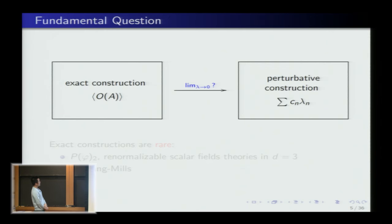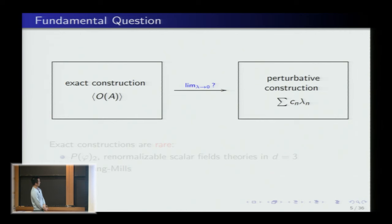The fundamental question then is: if we have an exact construction of a path integral, and we always have the perturbative construction, is it true — just like in the finite-dimensional example — that when I send λ to zero, the perturbative series is an asymptotic series of the exact answer? This is a very rare situation, because only in very few examples do we have an exact construction.